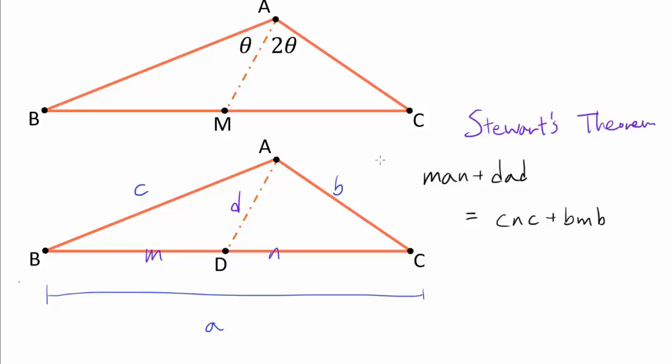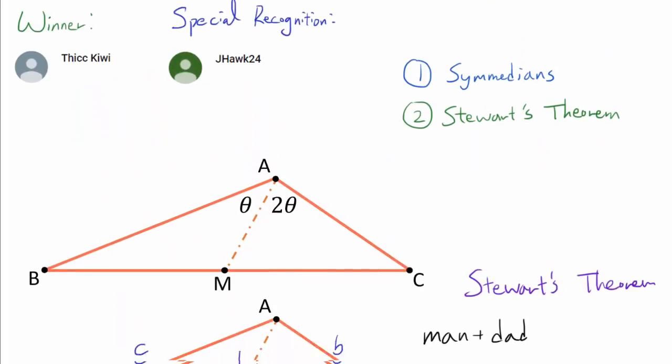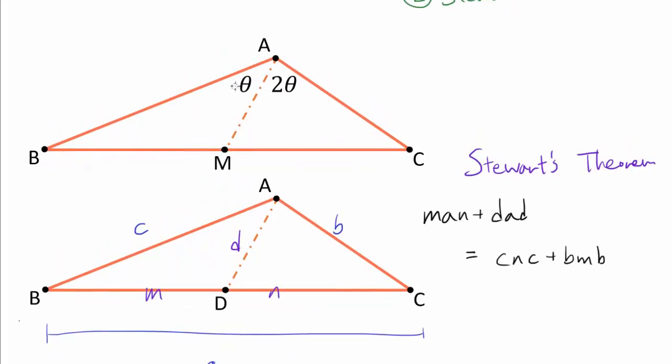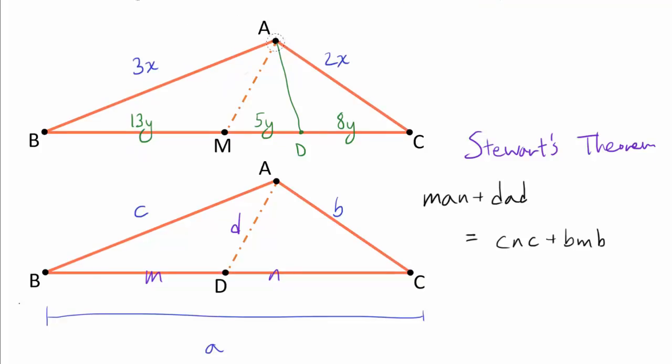And Stewart's theorem allows us to relate every side length arising from this dropping down of a cevian in a very easy to remember compact way. So here is what Jayhawk24 did. We are not going to use these angles at all, so let's erase them. Now we still have the point D, and we have it divided 8Y, 5Y, 13Y, and on top we have it divided 3X and 2X. And Jayhawk24 begins the solution by applying Stewart's theorem to triangle ABC with AM as the cevian. And we should really label AD as D1 and AM as D2, and we wish to compute D1 over D2. Now if you apply Stewart's theorem to triangle ABC, we get MAN, which is 13Y, times 13Y, times 26Y, the entire thing is 26Y, plus DAD, which is D2 squared, times 26Y, is equal to CNC plus BMB, which is C squared, 9X squared, times N, which is 13Y, plus B squared, times M, which is again 13Y.